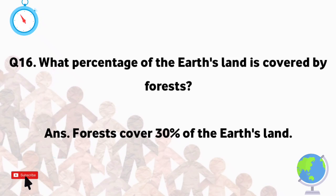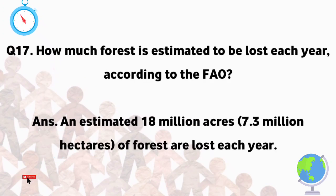What percentage of the earth's land is covered by forests? Forests cover 30% of the earth's land. According to the FAO, an estimated 18 million acres, or 7.3 million hectares, of forest are lost each year.